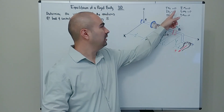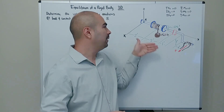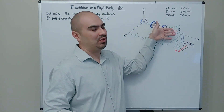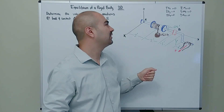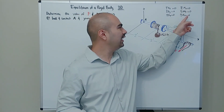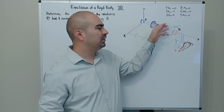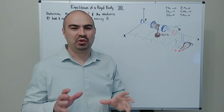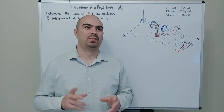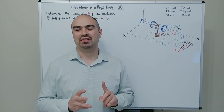Since this problem is in three dimensions, we're going to have up to six equations of equilibrium. The sum of forces in the X, Y, and Z directions being zero means our body won't translate anywhere. The sum of moments about X, Y, and Z axes ensures the body is not rotating — it's perfectly still.